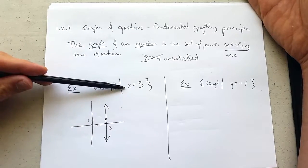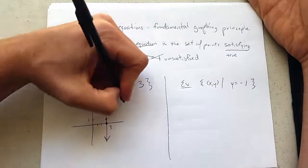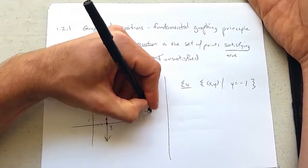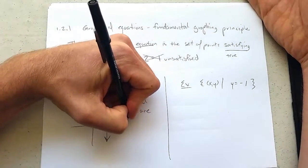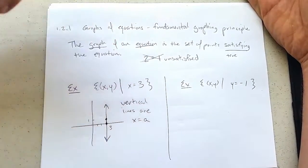This is a vertical line. So vertical lines look like x equals a number. So vertical lines are represented by the equation x equals a for some number a.